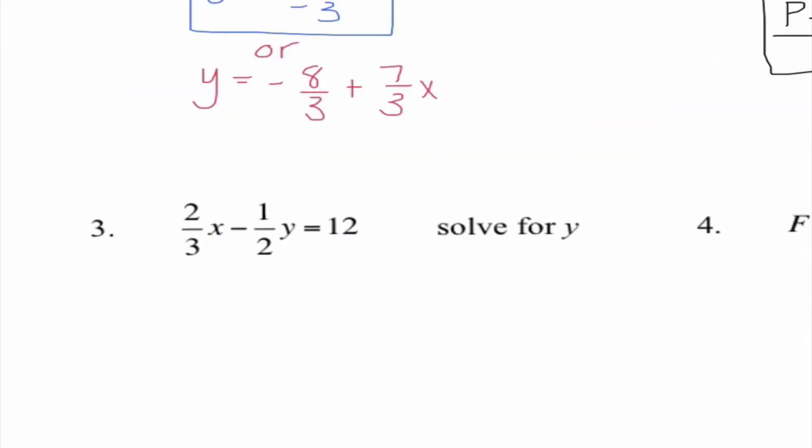Number 3, we're trying to solve for Y. So once again, I want to get rid of everything over here other than the Y. So I'm going to get rid of this 2 thirds X first by subtracting 2 thirds X from both sides. Or, another way we could think about it, if you are someone that hates dealing with fractions, we could always get rid of those fractions right away also. And it really doesn't matter. I'm going to go ahead and model doing it that way just so we remember how to do that.